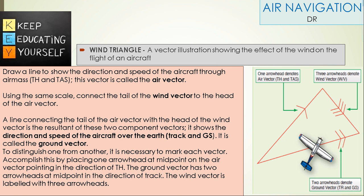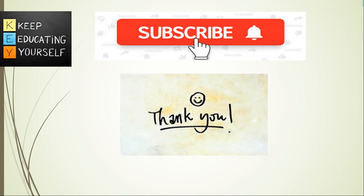To distinguish one from another, it is necessary to mark each vector. Accomplish this by placing one arrowhead at midpoint on the air vector pointing in the direction of true heading. The ground vector has two arrowheads at midpoint in the direction of track. The wind vector is labeled with three arrowheads.